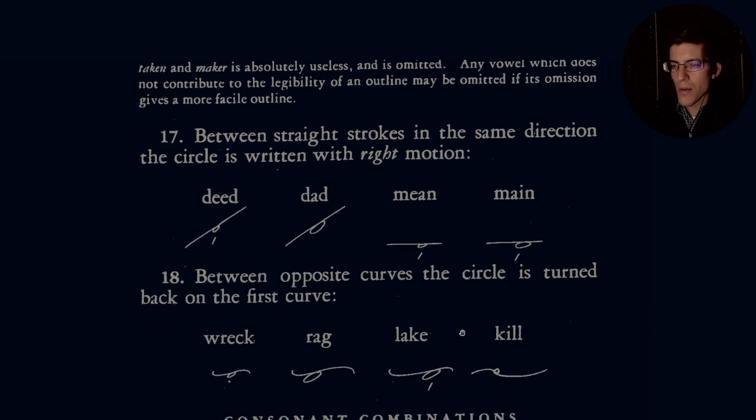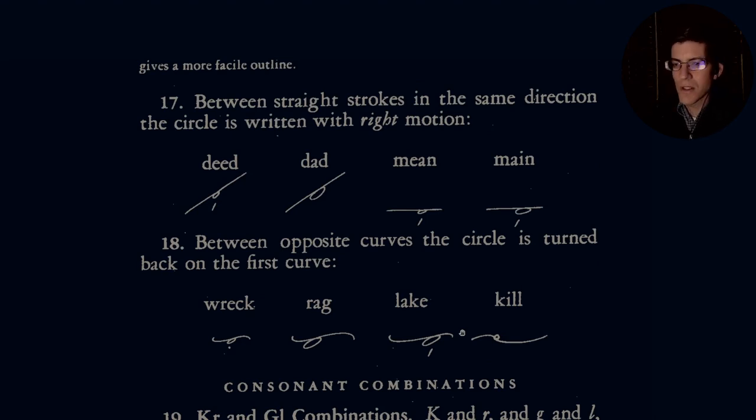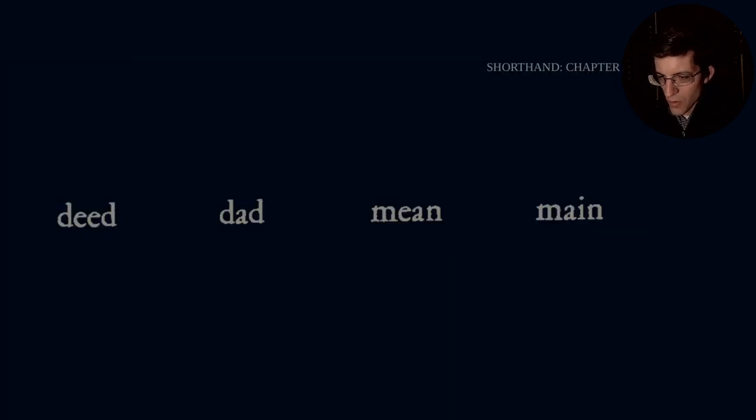Moving on to Section 17. Between straight strokes in the same direction, the circle is written with right motions. Remember, right means clockwise. Let's go ahead and write out those words: deed, dad, mean, main. As you noticed, they still wanted the versions of, they still wanted the vowels marked.